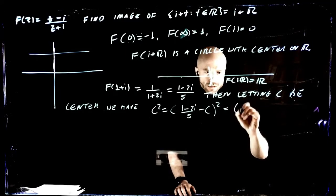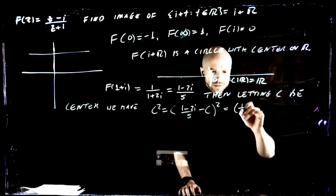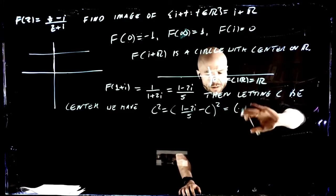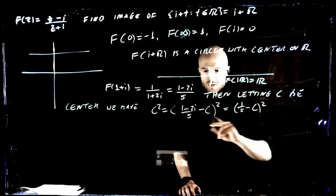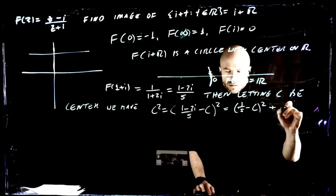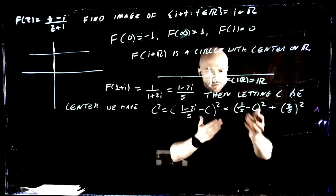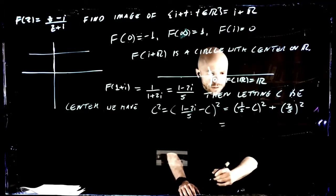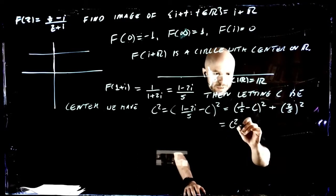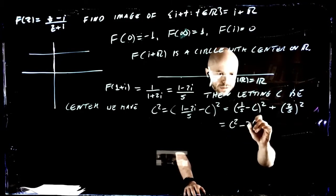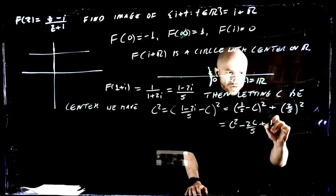Then this is 1 over 5 minus C, everything squared. And this thing is just 2 over 5 squared. What we're looking at is a nice quadratic equation in terms of C. We're going to have C squared, minus 2C over 5, and then plus 1 over 25.